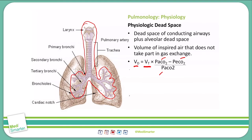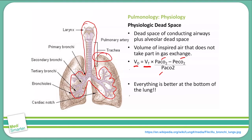The apex of the healthy lung is the largest contributor to alveolar dead space, which leads to the conclusion that gas exchange is better at the bottom of the lung, because there is less physiologic dead space.